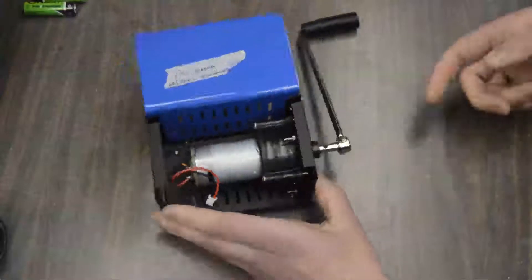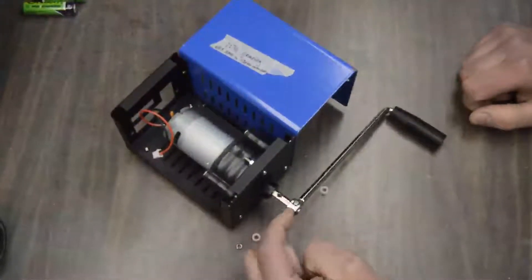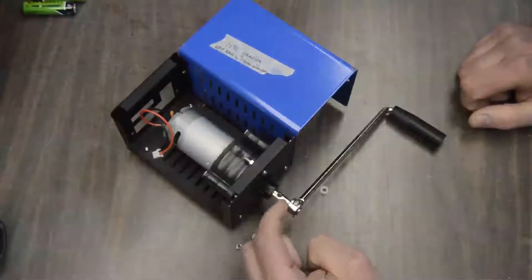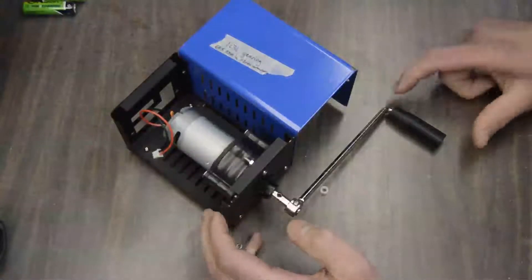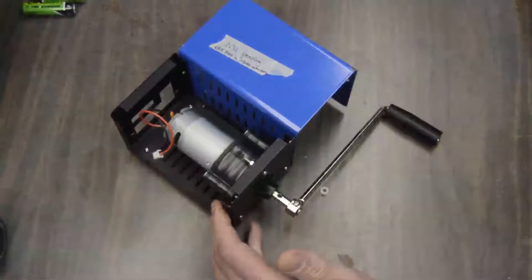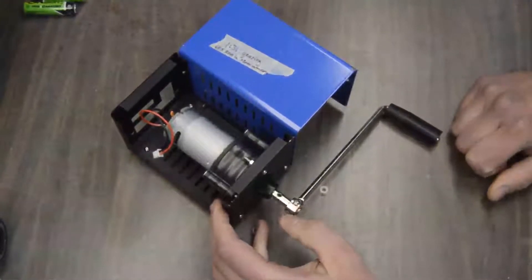People were asking about mods. The first thing I did was I drilled another hole in the shaft, and I moved the handle out about three quarters of an inch, because whacking your knuckles on the edge of a table is not good. You don't want to do that more than once.